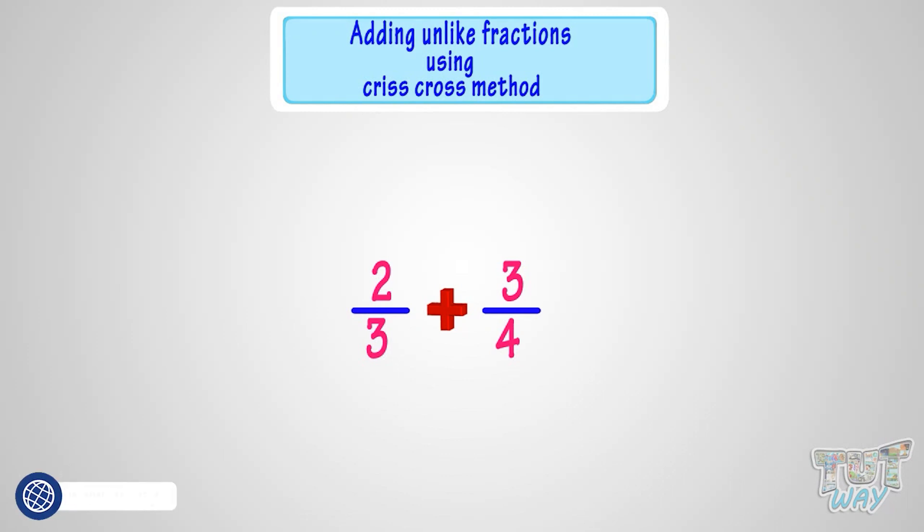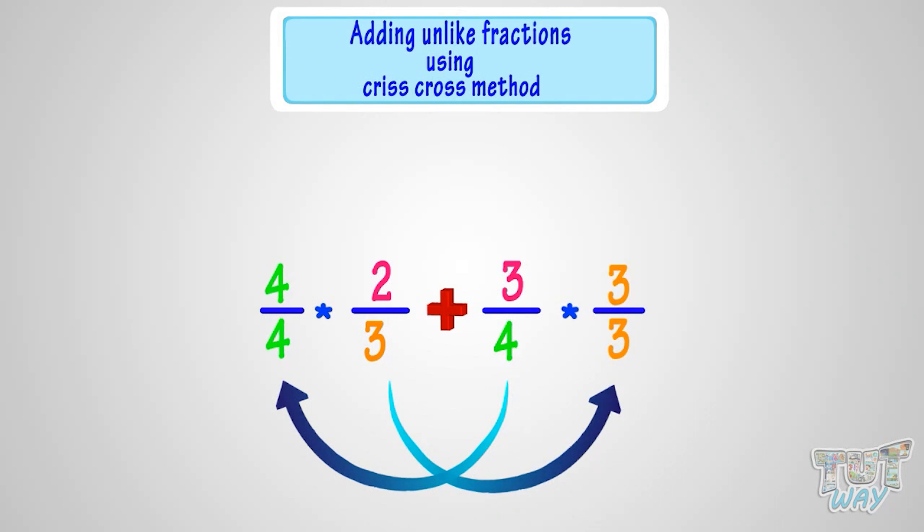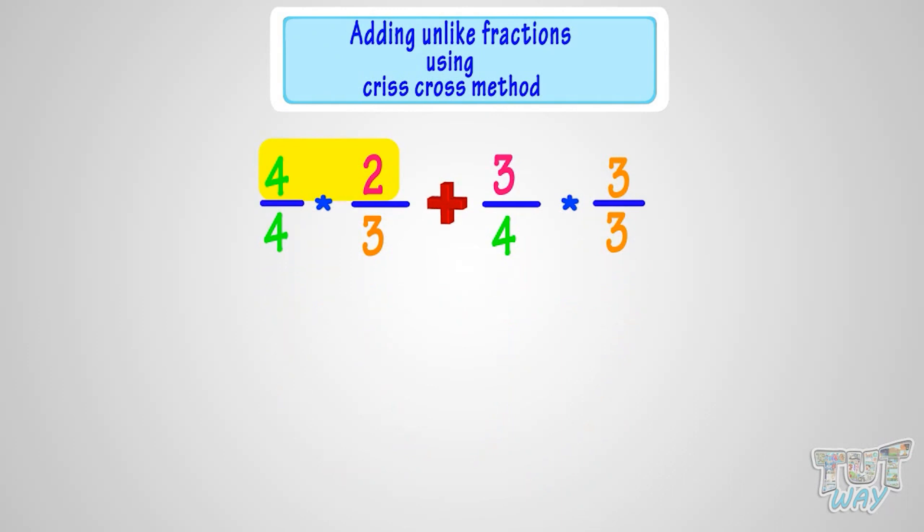Like here, multiply both the numerator and denominator of 2 by 3 with 4, so it looks like a criss-cross. 4 multiplied with 2, we get 8. 4 multiplied with 3, we get 12.